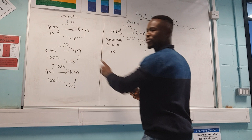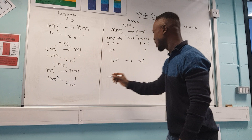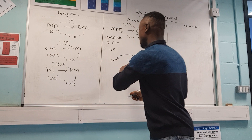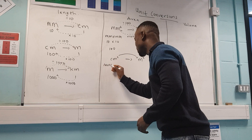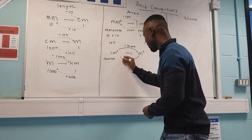The same principle applies to centimeters squared to meters squared. It's 100 times 100, which gives four zeros — that's 10,000. So if you're moving from centimeters squared to meters squared you divide by 10,000, and moving from meters squared to centimeters squared you multiply by 10,000.